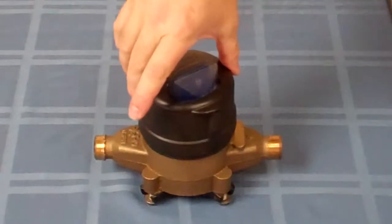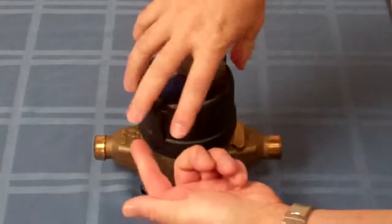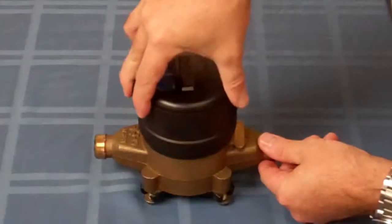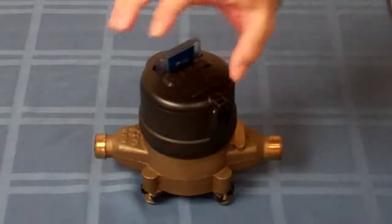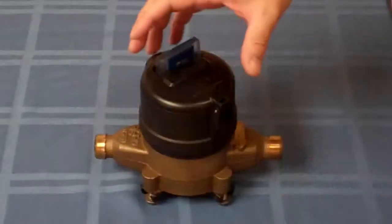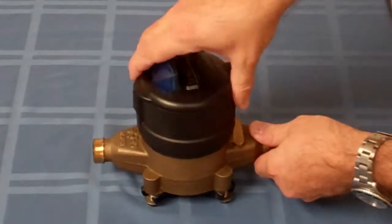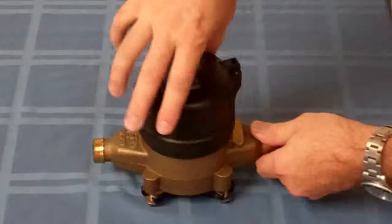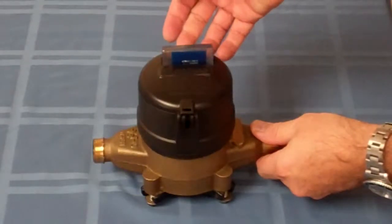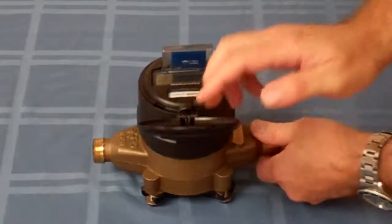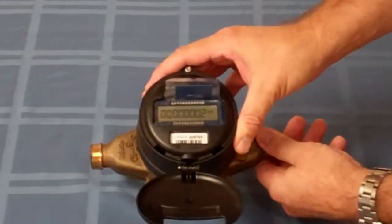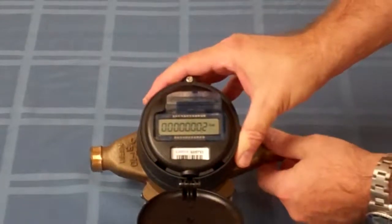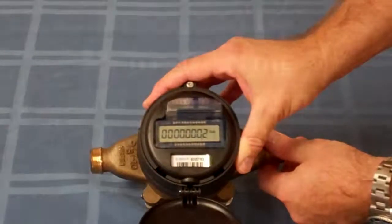Once you snap that on there, what you're going to want to make sure is that it's seated all the way across on the bottom. If it's not snapped on all the way, you'll see a gap there. But there you go, it's snapped on. You'll have 180 degrees of turn to orient the register any way you like. And there you have it. You now have turned your Neptune T10 into a smart meter.